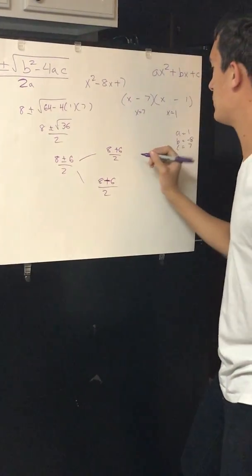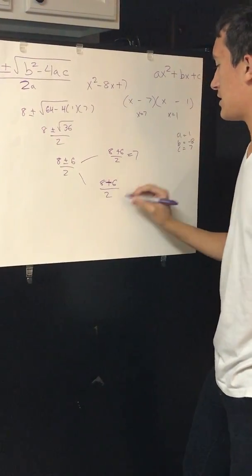So this equals 14 over 2, which equals 7, and this equals 1.